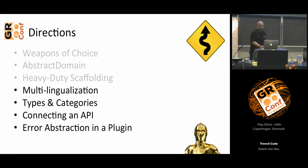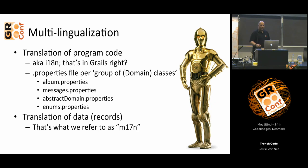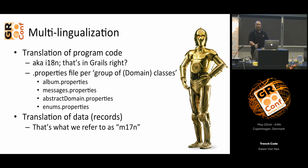Something we call multilingualization — it's not exactly the correct term. You have like translation of the program code, which is usually known as internationalization, and that's in Grails. We don't do very different things there. We typically have a properties file for a group of domain classes. But what we call multilingualization is a translation of the data record — all the records entered in the system, like a product, can be translated into a Danish version of the product.